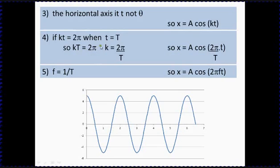So kt equals two pi. That gives us k equals two pi divided by T. So now our equation becomes x equals A cos two pi over the big T, the period, times a small time - that's the time that's actually elapsed in this oscillation since you started. But we also know f equals one over T, so I can get that one over T there, make it a bit tidier by putting an f on the top.